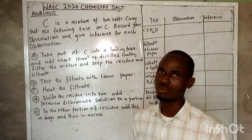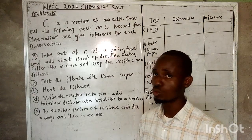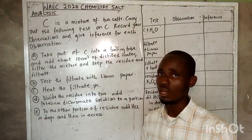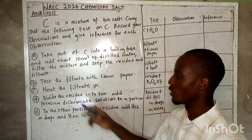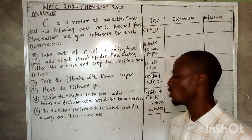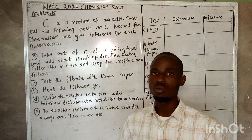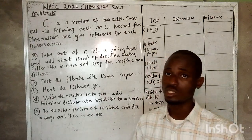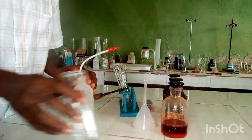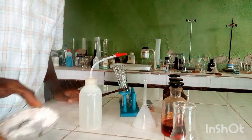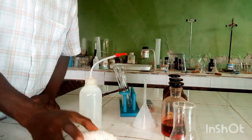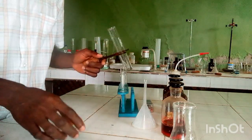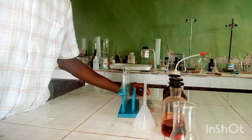The heating test I'm not going to do because the filtrate does not need to decompose, so we should be expecting no gas. Then we divide the residue into two portions: add potassium dichromate solution to one portion of the residue, and add HCl to the other part of the residue to see what happens. Now let's perform the tests. This is salt C — the mixture of two salts.